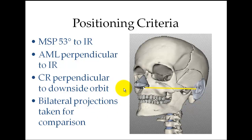Bilateral projections are typically taken for comparison. Sometimes doctors want only the orbit of interest in each view, and sometimes they want both. It's great to have both because if there's a blowout fracture on the other side, you can sometimes see evidence of that even in the view for the orbit of interest.